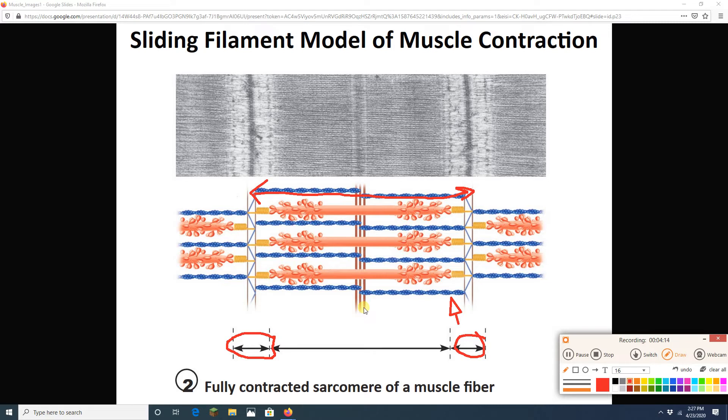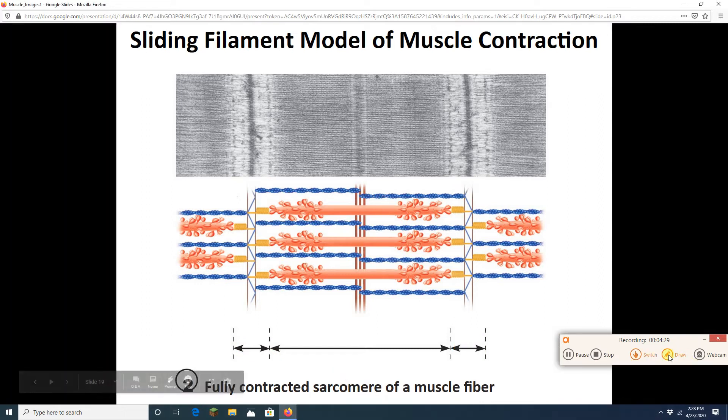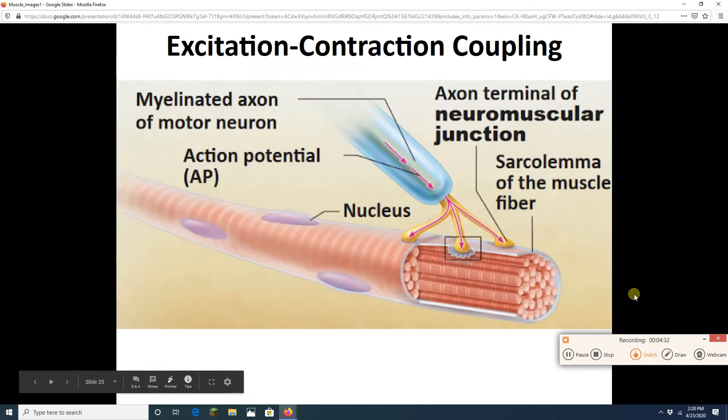This is how muscle contraction works. We got these thick and thin filaments arranged this way. The thick filaments grab onto the thin and pull them inward, and the sarcomere contracts.